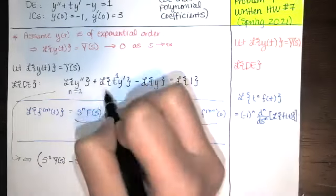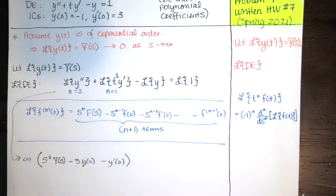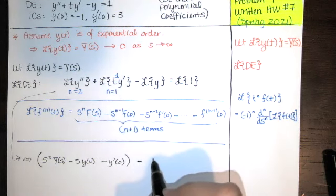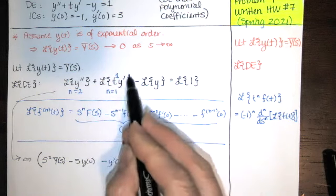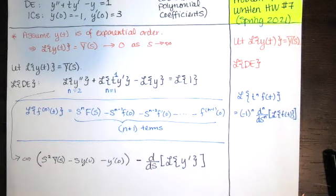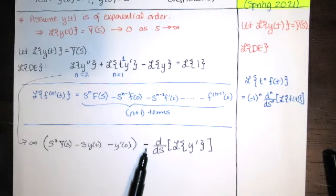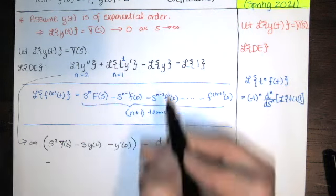We have T to the first, so n equals one, matching the pattern, and f(T) is Y prime. According to the theorem, we have negative one to the first times the first derivative with respect to S of the Laplace transform of Y prime. So we compute the Laplace transform of Y prime and then take its derivative with respect to S.